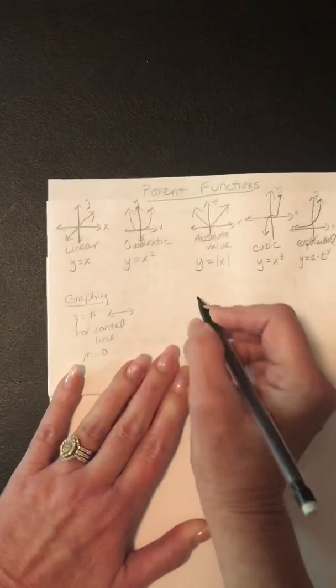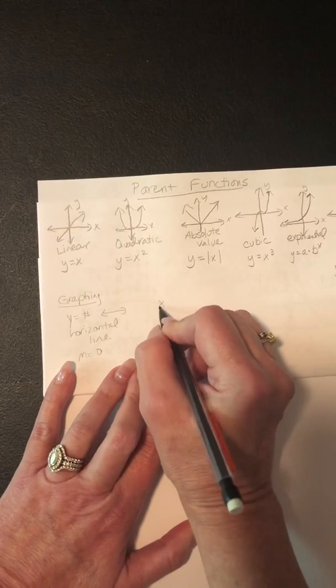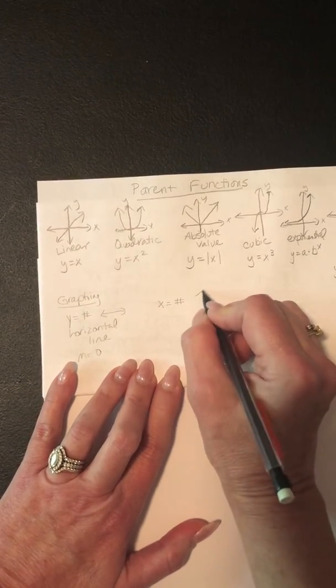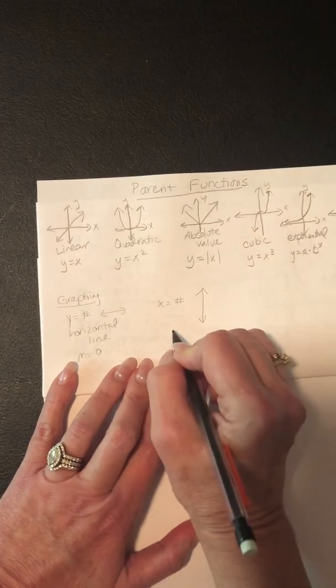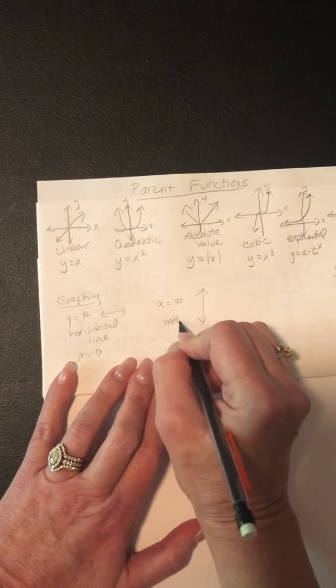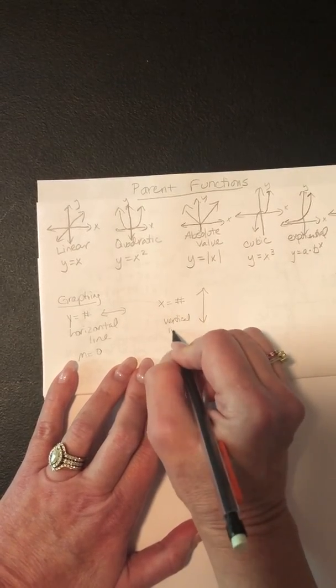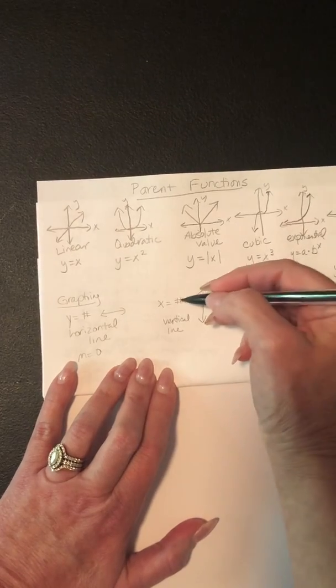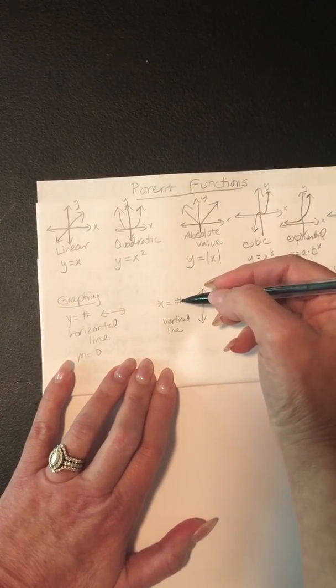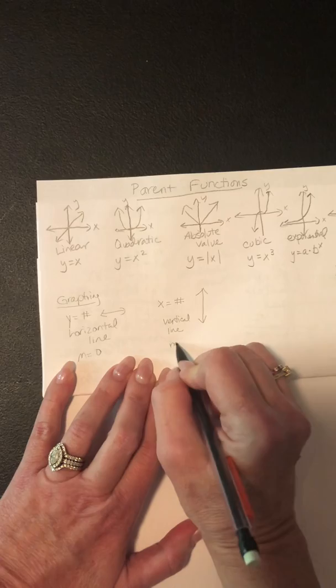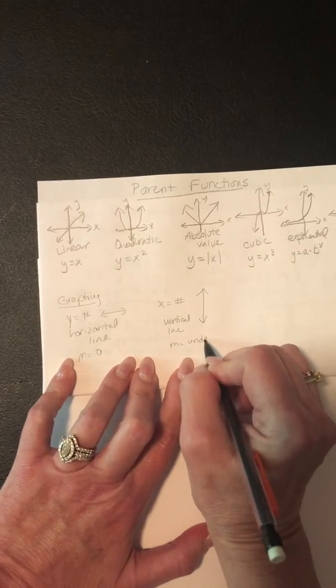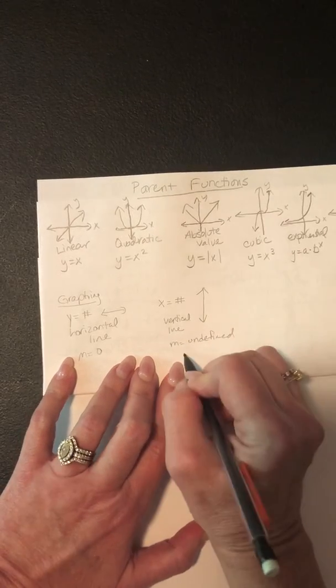And if you're graphing x equaling a number, any number, it's a vertical line. And it's vertical. And it's going to cross the x axis at whatever number this is, but it's not going to cross the y axis. And its slope is undefined. And another name to say that is no slope.